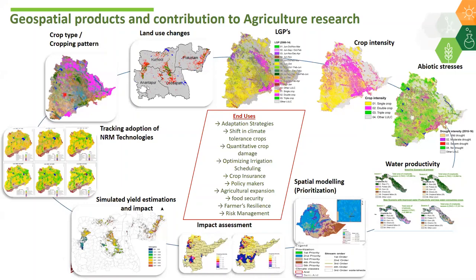Finally, abiotic stresses like drought and submergence are monitored over the years, and we identify areas where periodic drought and submergence are occurring to disseminate stress-tolerant varieties. These six products we are continuously working on. Apart from this, rice fallows are also one of the important things we are working on, which I will show later.